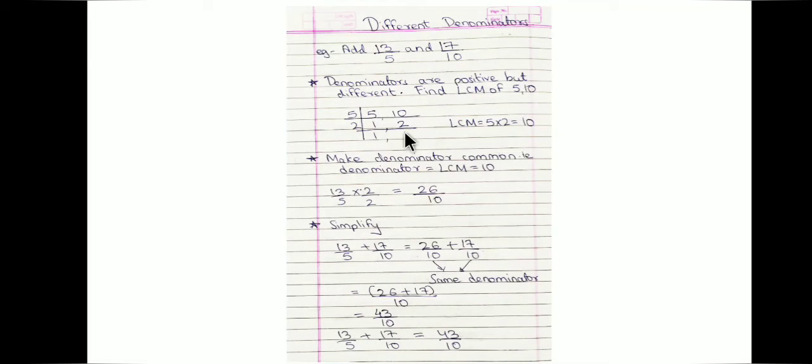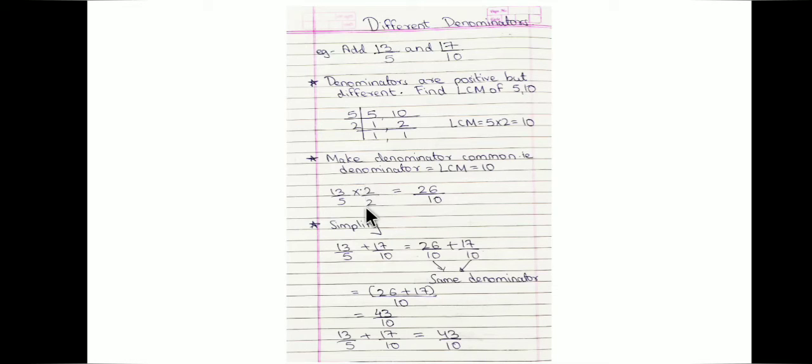Our next example: what if the denominators are different? Here the denominators are 5 and 10, and they have a common factor — that means HCF is not equal to 1 — so we will find the LCM. The LCM of 5 and 10 is 10. We make the first rational number have denominator 10 by multiplying by 2, giving us 26/10.